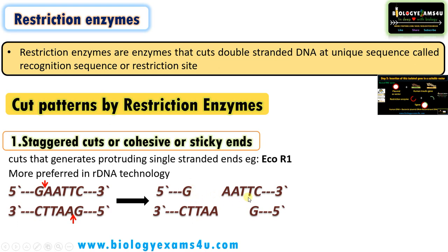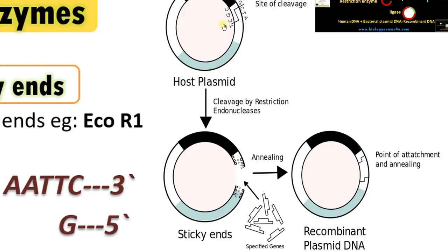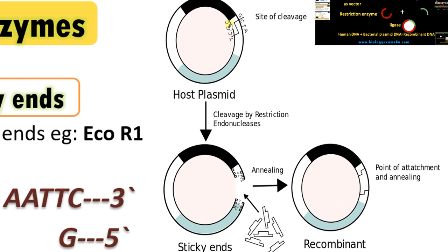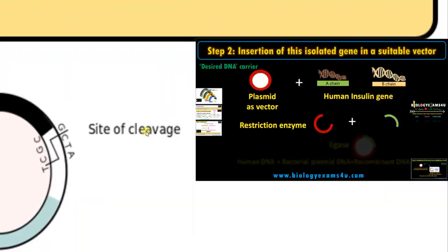Sticky ends are very much preferred in recombinant DNA technology. We cut the plasmid using EcoRI, producing a sticky end. This DNA fragment is also having a sticky end. This unpaired region will easily form hydrogen bonds, so we can have a recombinant molecule very easily. That is why restriction enzymes that provide sticky ends are preferred. The discovery of restriction enzymes helped Paul Berg, Cohen, and Boyer to make the first recombinant DNA molecule.